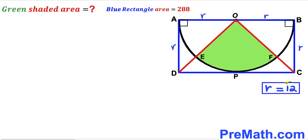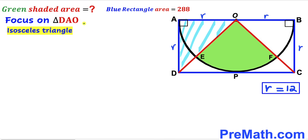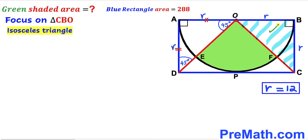Now let's focus on right triangle DAO. We can see it is an isosceles triangle since the two legs are equal in length, so both base angles must be 45 degrees. Likewise, triangle CBO is an isosceles triangle as well, since its two legs are also equal, giving angles of 45 degrees each in that triangle too.